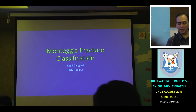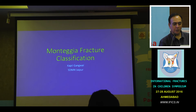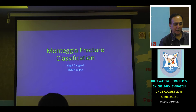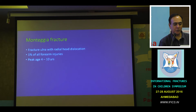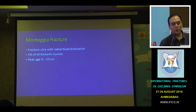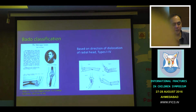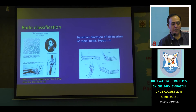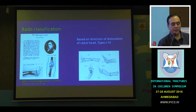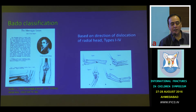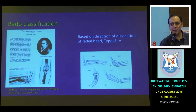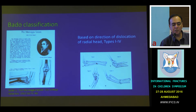Kicking off the pre-launch session on Monteggia fractures. This is a fracture of the ulna with a dislocation of the radial head. It constitutes about 1% of all forearm injuries, and peak age incidence is between 4 and 10 years. Bado classified these in about 1967 and described four types based on the direction of the radial head dislocation.